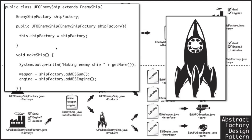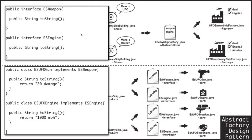Now let's look at how we accumulate or attach parts to this spaceship. We have ESWeapon, which is an interface that forces every weapon to implement the two string method. And an interface ESEngine, which also forces each object to implement two string. When the actual gun object is called, it simply returns 20 damage and 1,000 miles per hour. What's really cool is that any part that implements the interface ESWeapon can easily replace that part in any ship, providing flexibility on a level that is almost incomprehensible.